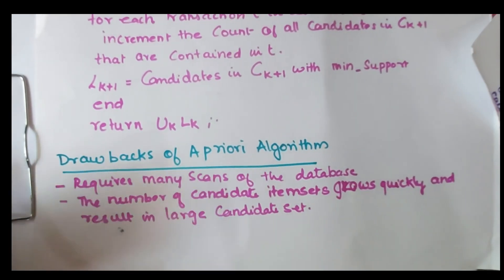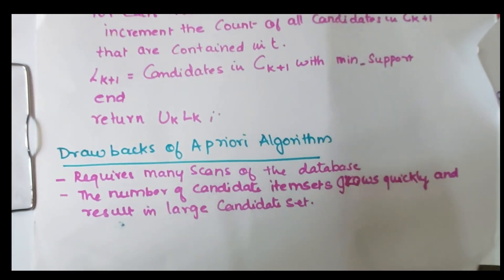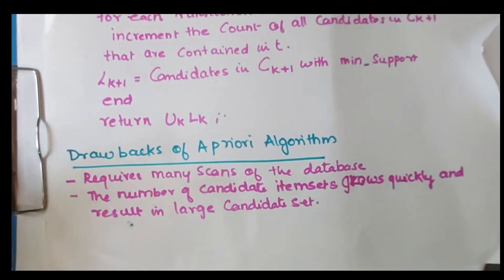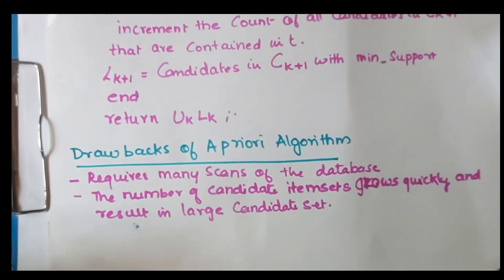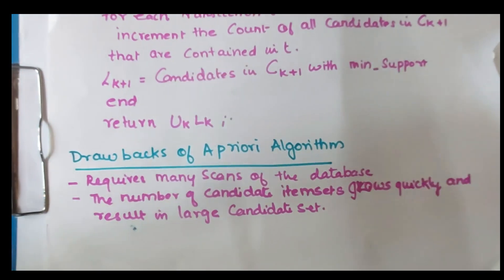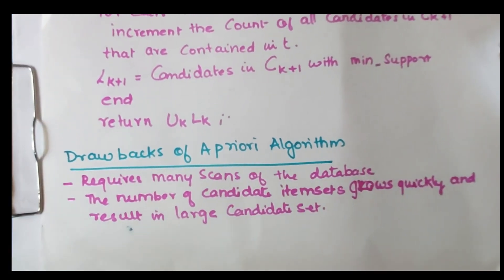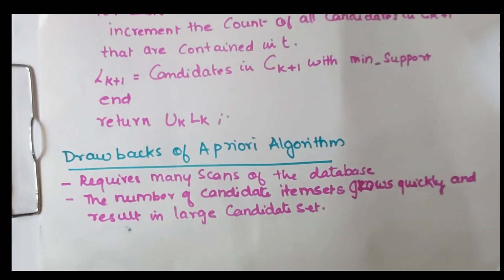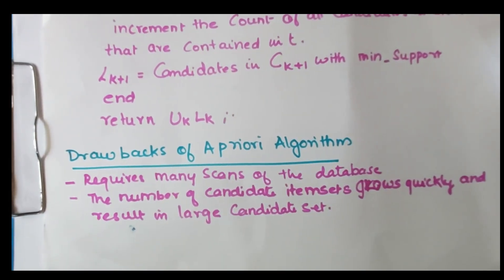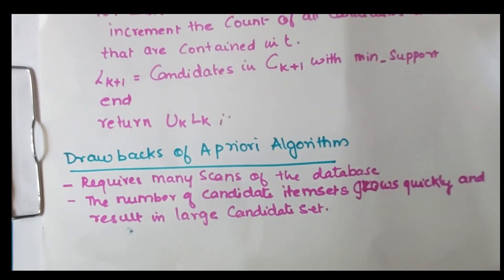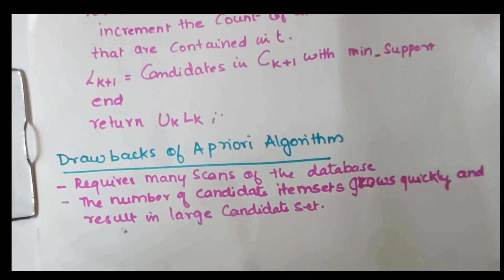One more point to add is the drawback of the Apriori algorithm. First, it requires many scans of the database — each time you find support, you are scanning the entire database. Second, the number of candidate item sets grows quickly, resulting in a large candidate data set.